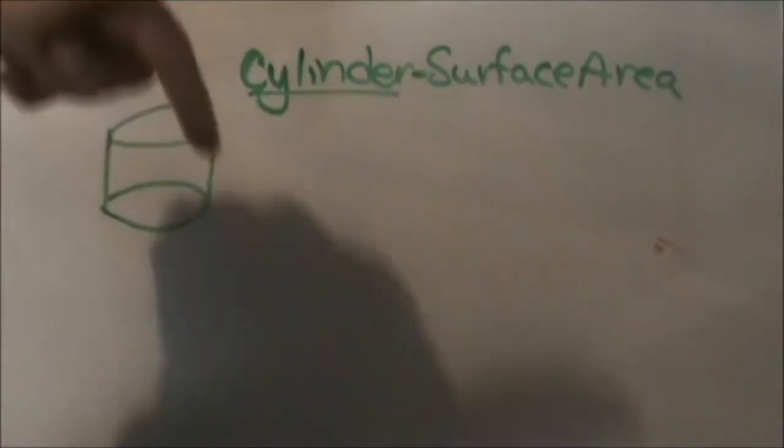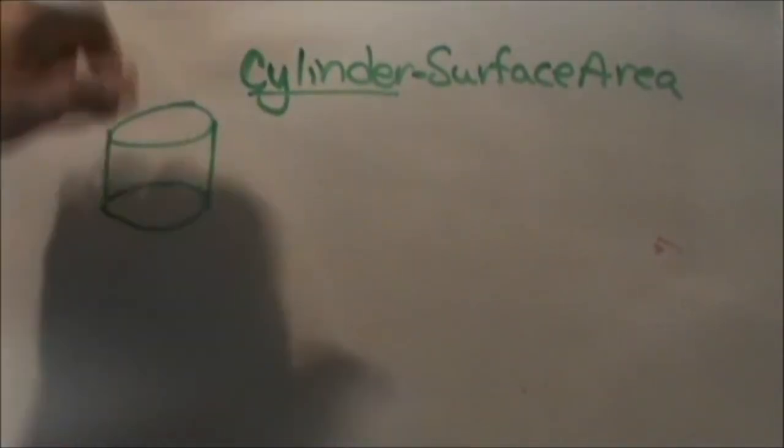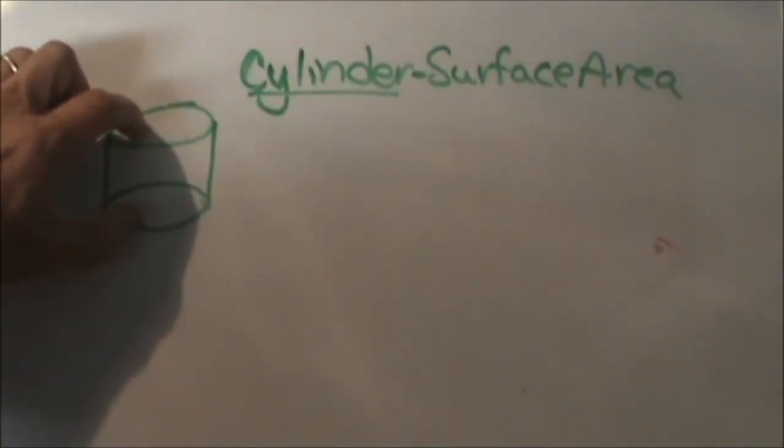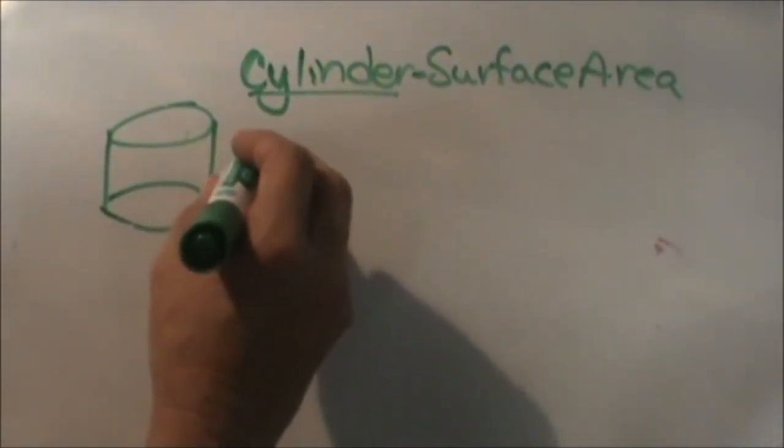You've got the circular sides, so if you're looking at a can, it's the size of the can or the label on the soup can, and then the top, bottom, and base, which is the lid, which are circles. So we're going to divide it into two parts.